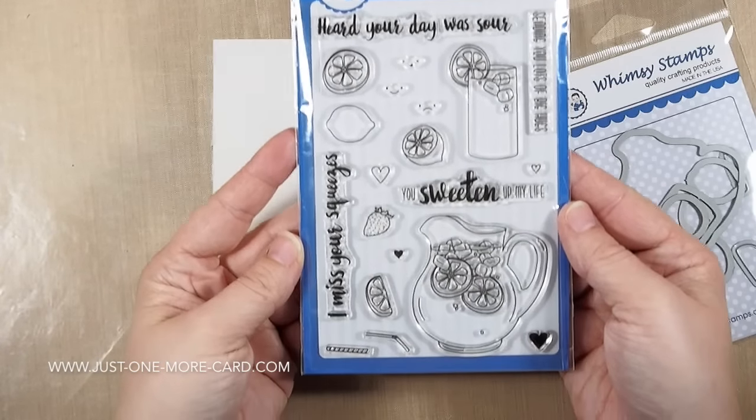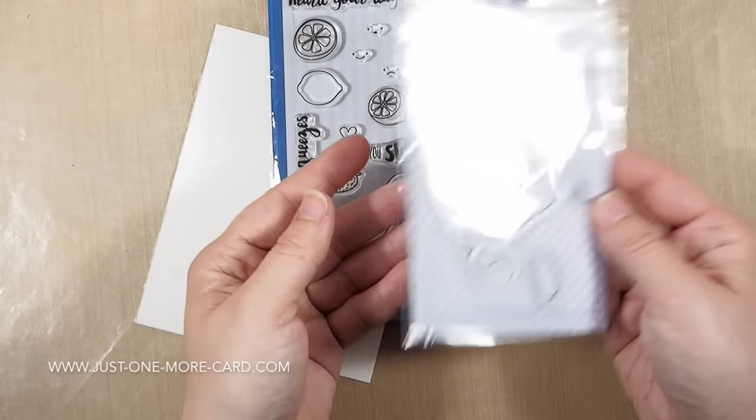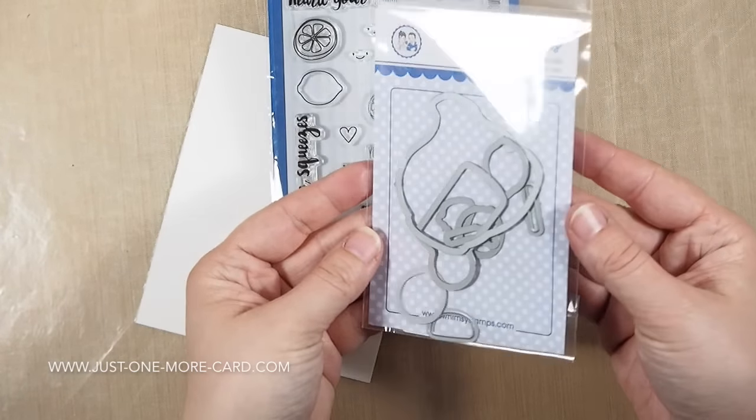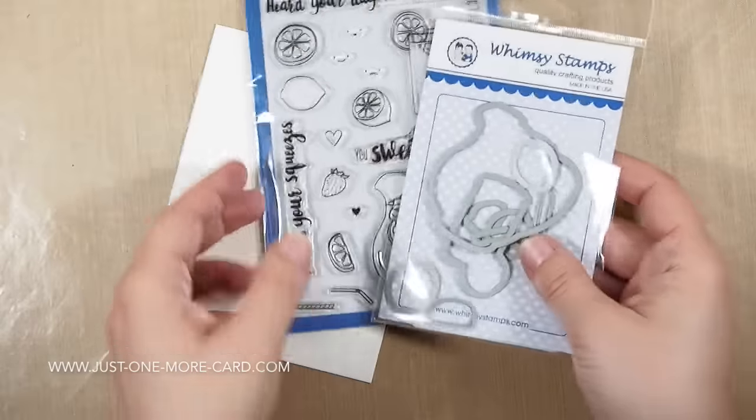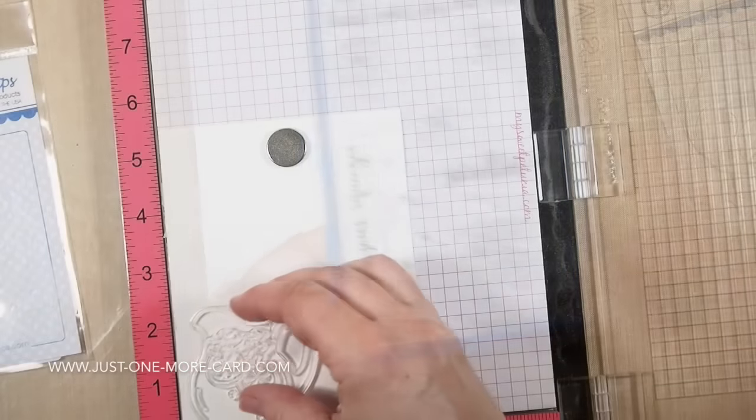I'm using this beautiful stamp set that comes with matching dies. They all come together and I already snipped them apart so I could use them easier. What I want to do today is partial die cutting and I'm really excited about this.